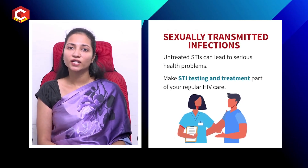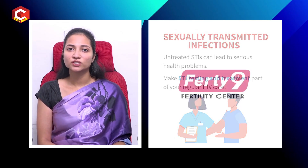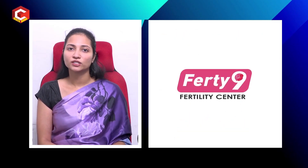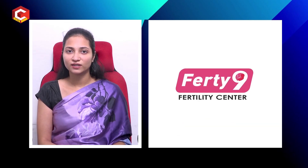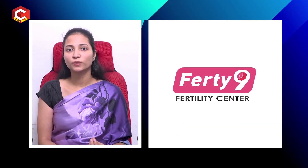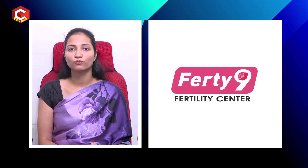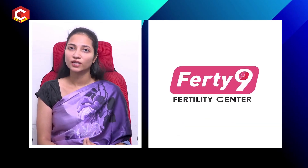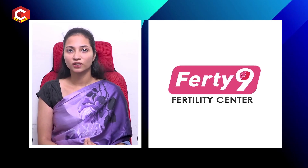Another key investigation is karyotyping, which checks for genetic abnormalities. This includes Klinefelter syndrome and chromosomal problems, as genetic issues can be associated with azoospermia.